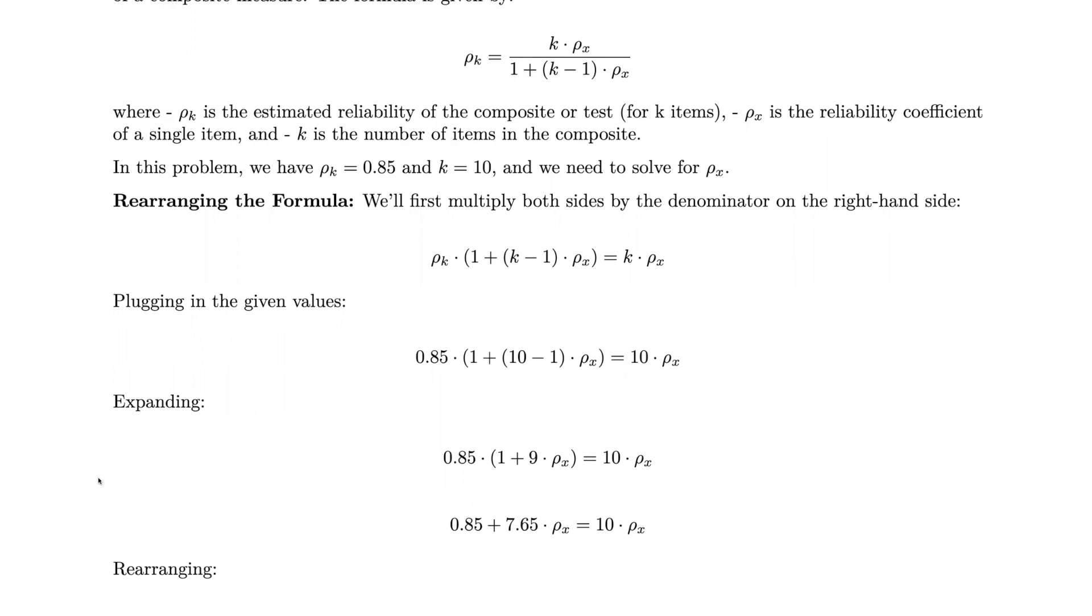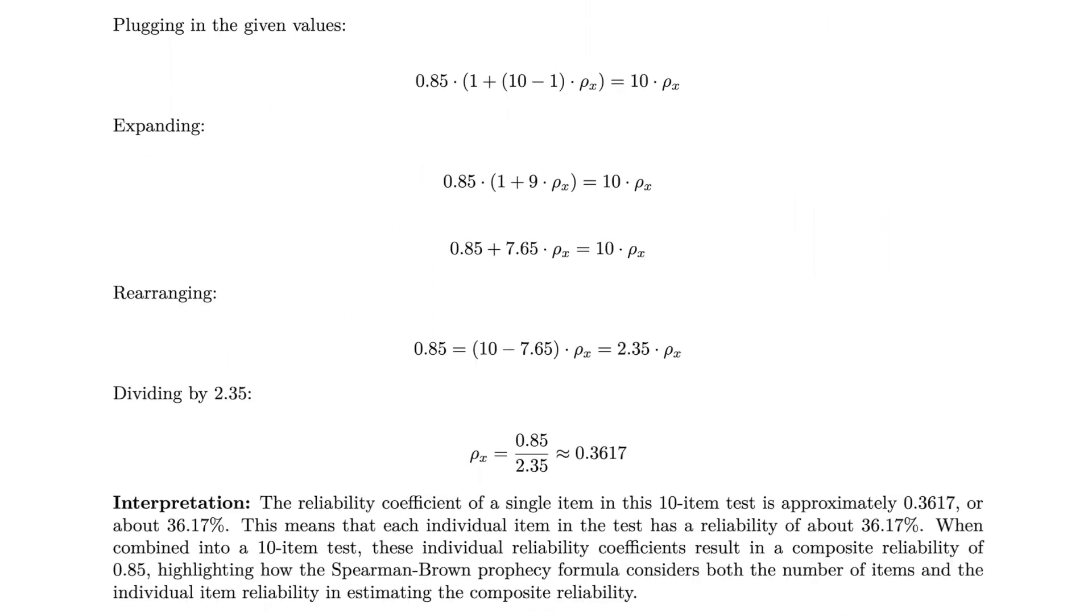When we rearrange and isolate ρ, we're going to get 0.85 equals 2.35 times ρₓ. Finally, we divide by 2.35, which gives us ρₓ is approximately 0.3617.